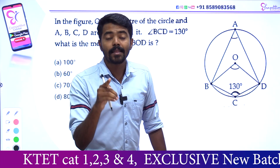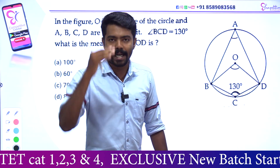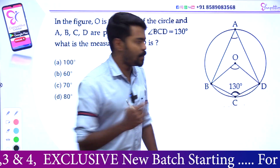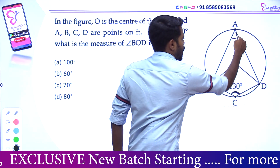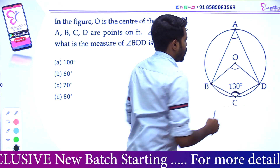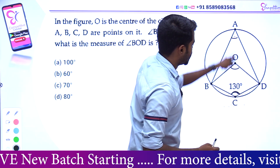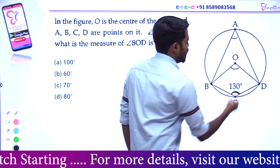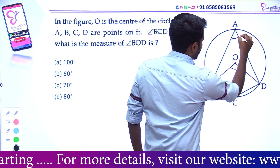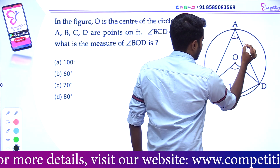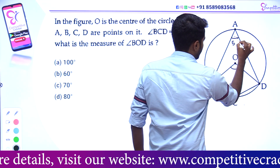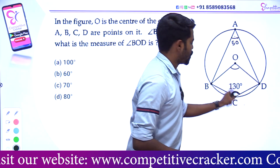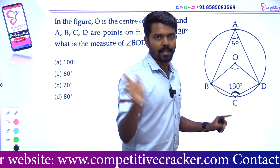Opposite angles are supplementary. This angle is the same angle — opposite angles. We can write angle A equal to 50. 90, 90, 180 — that's how it is. If you have 100 at this angle, you have to be 100 at this angle.